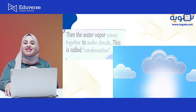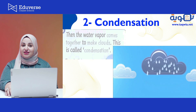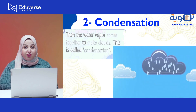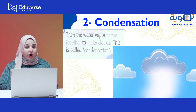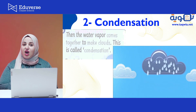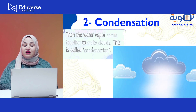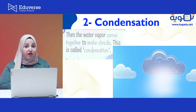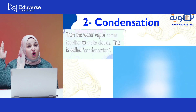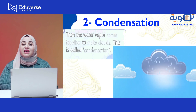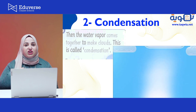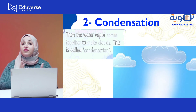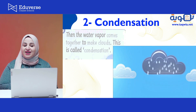The second stage is called condensation. Condensation means that the water vapor which goes up to the sky becomes cold or colder. When it becomes colder, this is called condensation. The water vapor forms drops of water, and they go together to form the clouds. In this picture you can see the water vapor going up to the sky, then becoming colder and forming water drops which make the clouds.